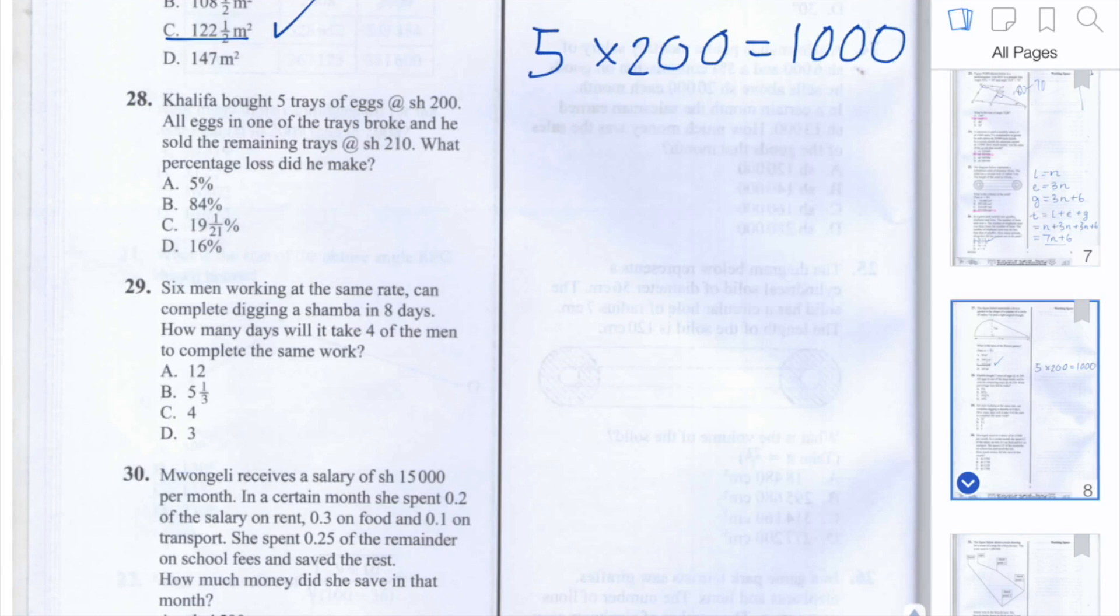Next let's work out how much he sold them for. We know that one of the trays broke so he only had four left to sell and he sold those each at 210 shillings. Four times 210 is 840 shillings.